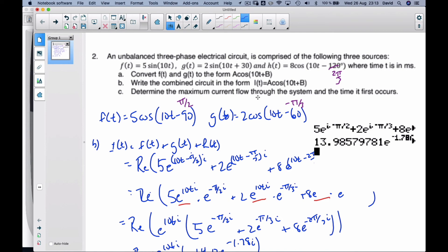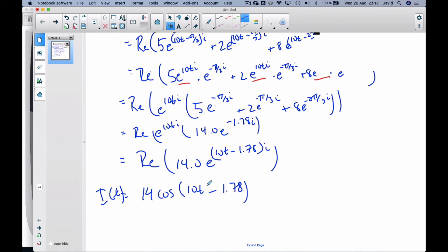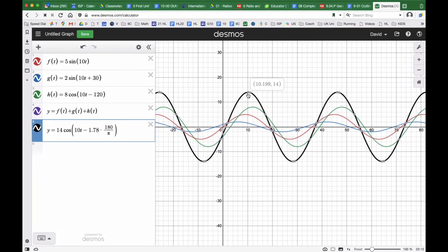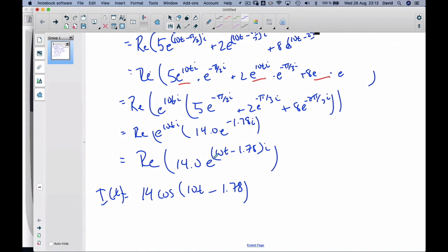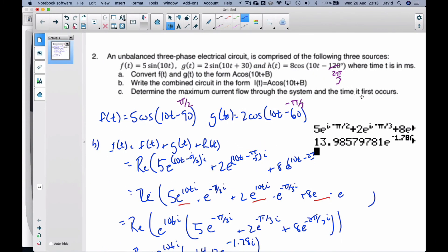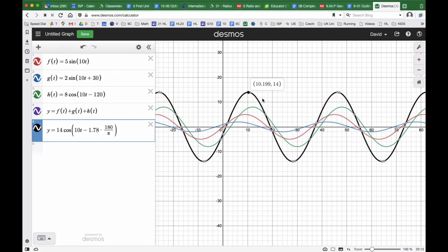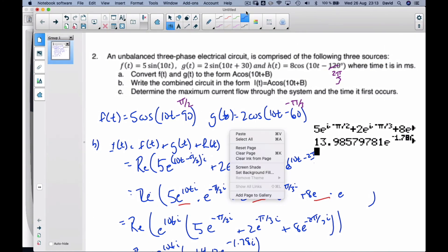To determine the maximum current flow through the system, well, the maximum current flow is going to be 14. And it occurs, the first time it occurs in the system is at 10.2 seconds.